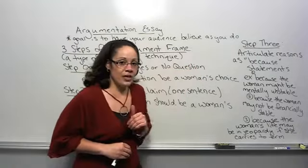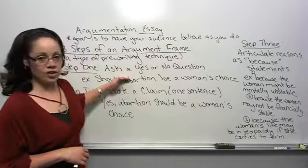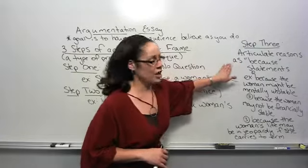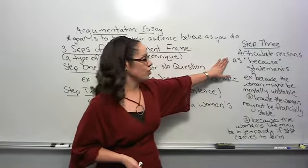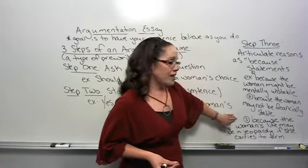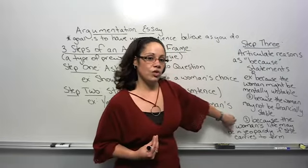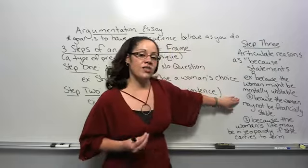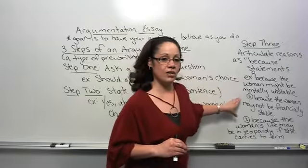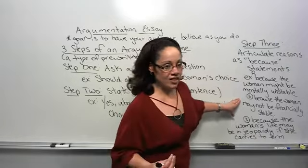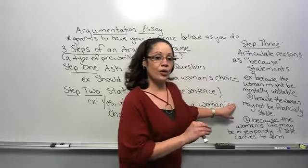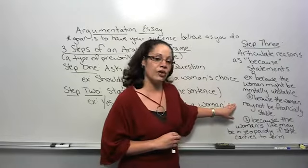Now moving on to step number three of the three steps of an argument frame. You have your question — step number one. You have your answer to your question — step number two. Now you have to give your reasons for choosing whatever your position was in step number two. You have to articulate your reasons as 'because' statements. I have about three examples here. Again, our question was: should abortion be a woman's choice? Every single one of your examples must begin with the word 'because.' And because every one of your statements begins with the word 'because,' it is not going to be a complete sentence. In this particular step, you're actually brainstorming — generating ideas to support your thesis statement.